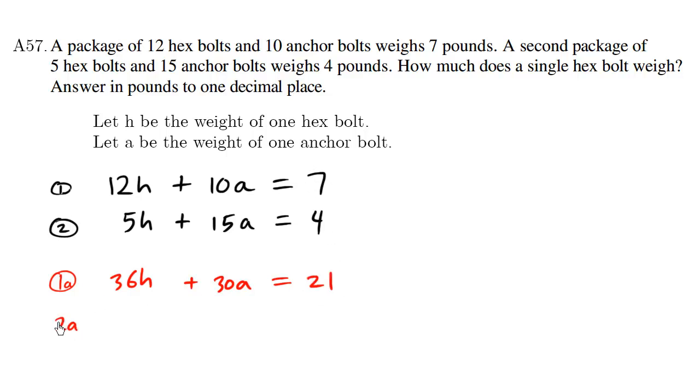And I have equation 2A here. And to make the 15A into a positive 30A, I'm multiplying everything here by 2. So the 4 becomes an 8, and the 5H becomes a 10H.